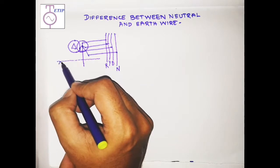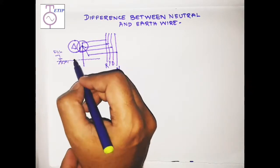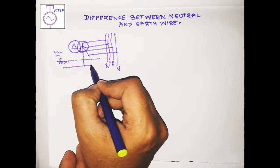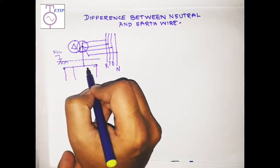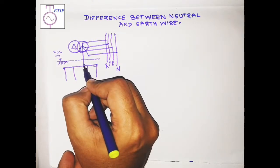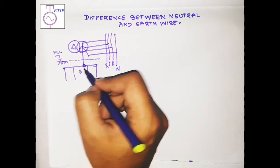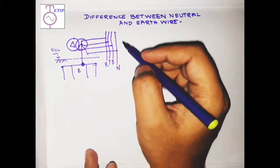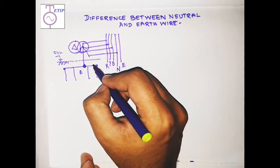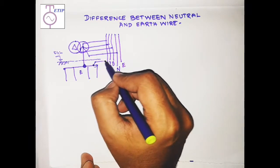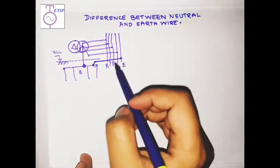This neutral is earthed at the substation end. Below the finished ground level, ground conductors and electrodes are laid, and the neutral is connected to these ground conductors. From here the earthing conductor is generated. In the switchgear there is another bus called the earth bus, which is connected to the substation ground mat.